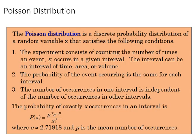The Poisson distribution is also a discrete probability distribution of random variable X and has the following conditions. One, the experiment consists of counting the number of times an event X occurs within a given interval. The interval can be time, area, or volume. Two, the probability of the event occurring is the same for each interval.